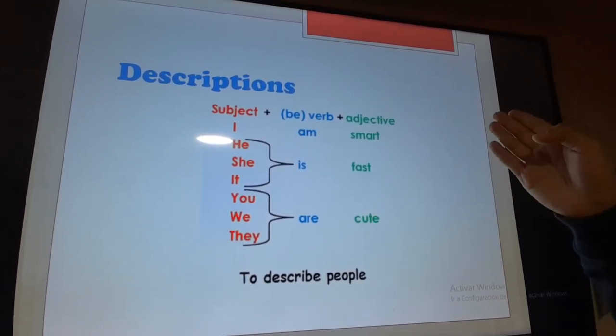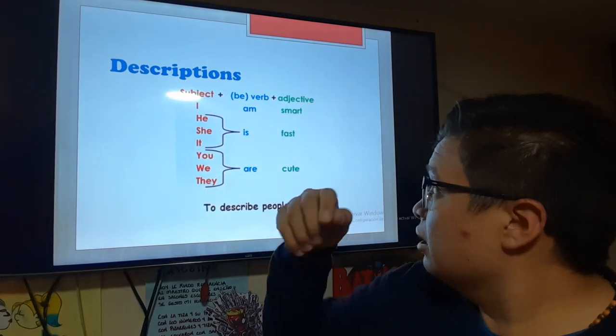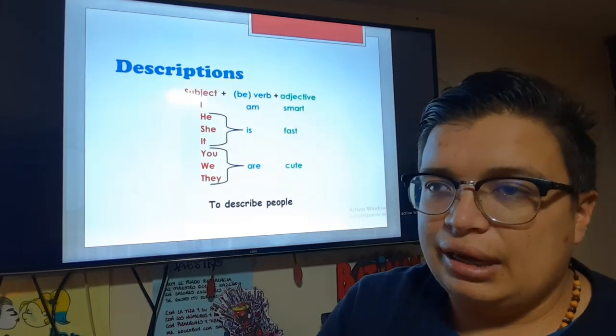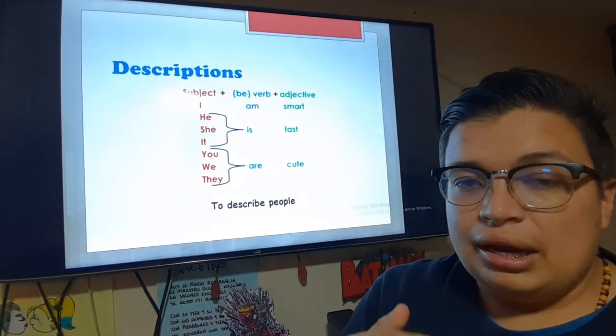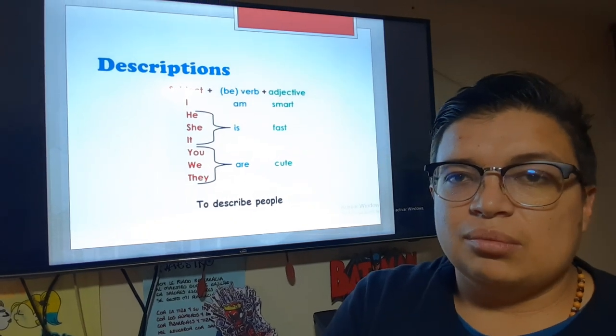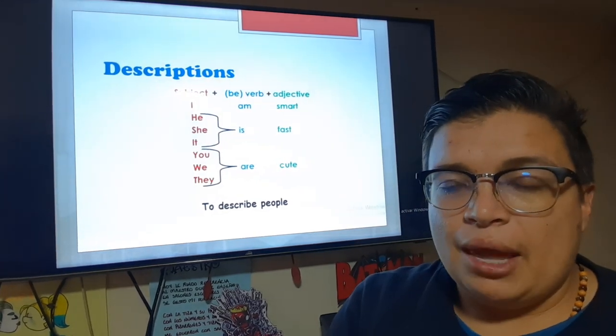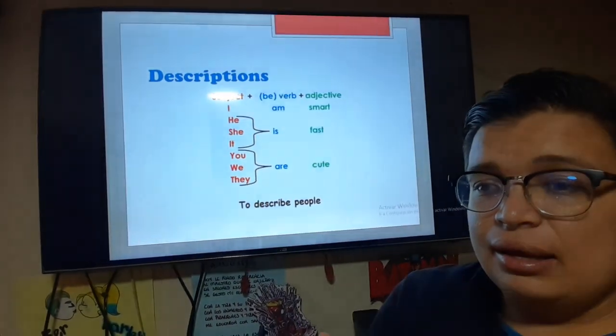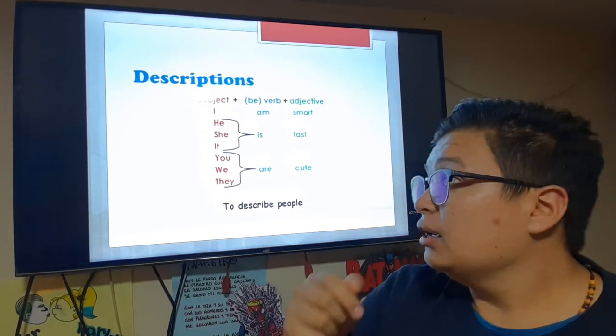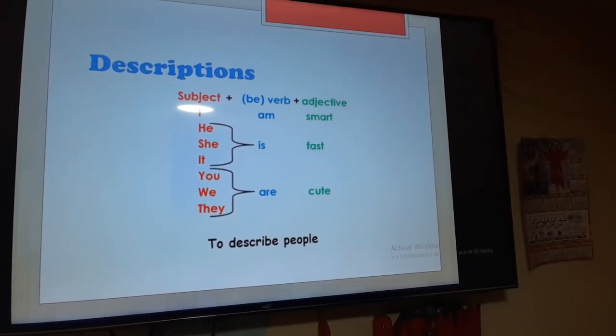En primer lugar, tenemos para las descripciones que hablar del verbo to be. El verbo to be es utilizado en primer lugar para hablar del tamaño, la altura. En segundo lugar, del peso, que si es gordito, que si es flaquito. En tercer lugar, tenemos el color de la piel, que supongamos él es blanquito, entonces ponemos white skin, que supongamos que es afrodescendiente, black skin o brown skin. Y por último, para hablar de adjetivos. Los adjetivos son características de una persona que tienen que ver, por ejemplo, inteligencia, rapidez, belleza, y bueno, toda esta cuestión.